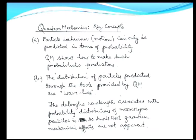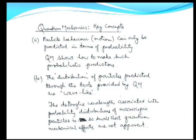Some of the key concepts of quantum mechanics: first, particle behavior or motion can only be predicted in terms of a probability. Quantum mechanics shows how to make such probability predictions of the motion of a particle subject to quantum mechanical laws. This is in contrast with Newton's laws, where it is not a question of probability but of certainty — for example, you can predict precisely when and where an eclipse will occur.